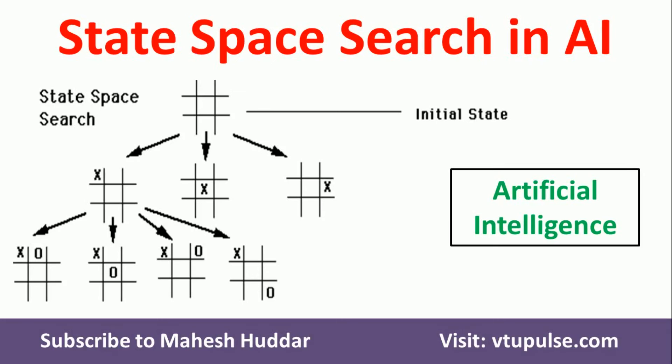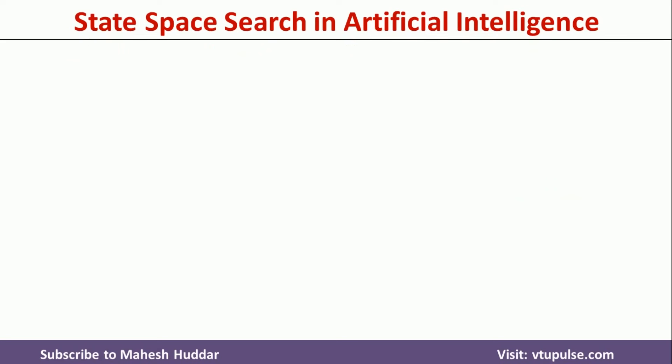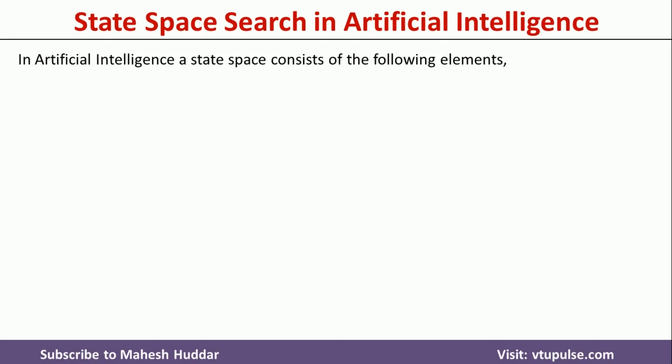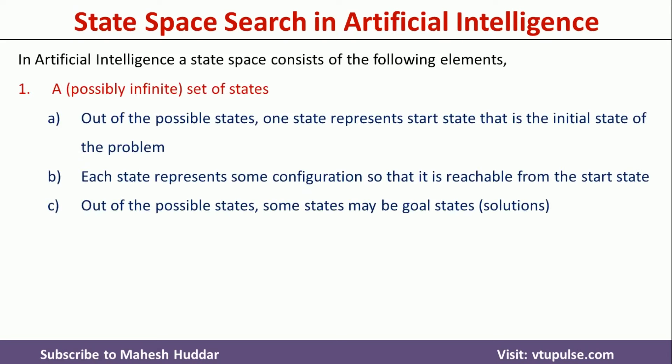Welcome back. In this video I will discuss what is state space search in artificial intelligence and how to represent a problem using state space search in AI. First we will try to understand what are the elements of state space search. State space search consists of mainly two elements.